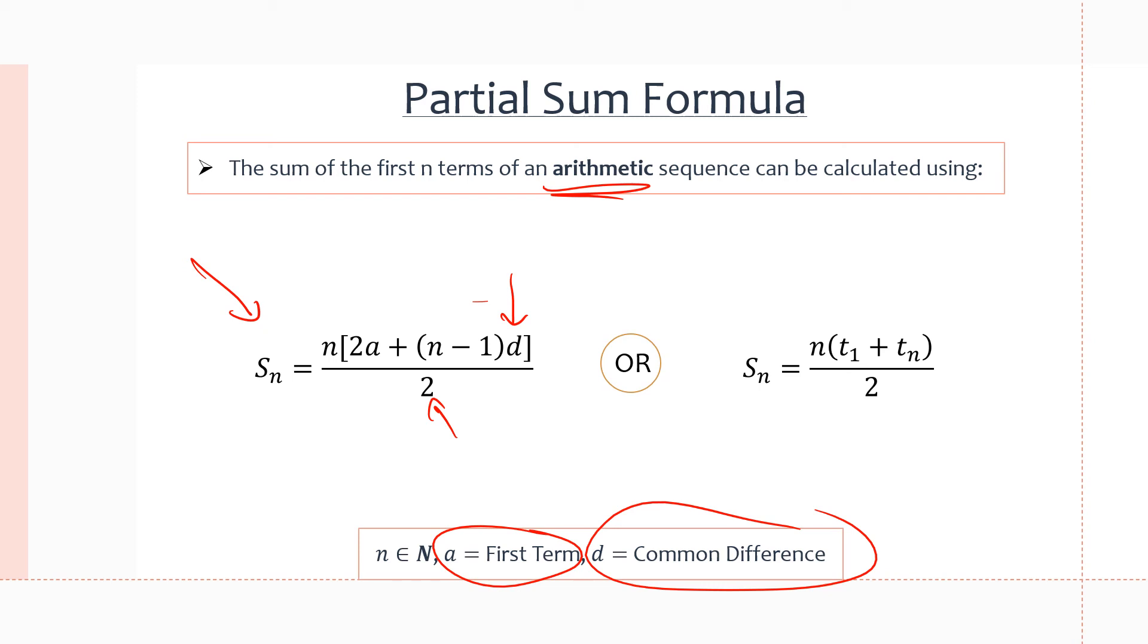Or, the second version is Sn equals n times t1, which is our first term, plus tn, which is the term we are stopping at. So if we have a sequence and we're calculating S of 4, this would be t4. If we're calculating S4, then t4.